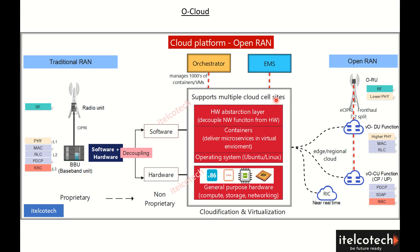An orchestrator such as Kubernetes can manage these multiple virtual machines and containers. Once virtualization is in place, the nodes on the left side are converted into a virtualized Open Distributed Unit (vO-DU) and a virtualized Open Central Unit (vO-CU), and we also have the RIC — a new component introduced in Open RAN.